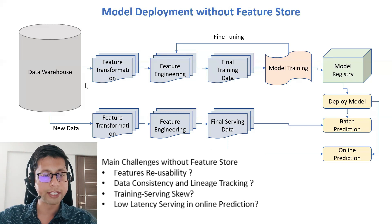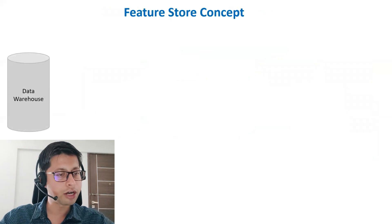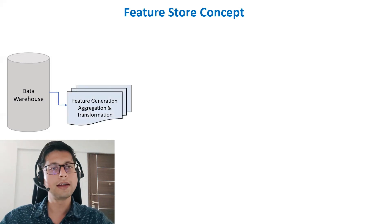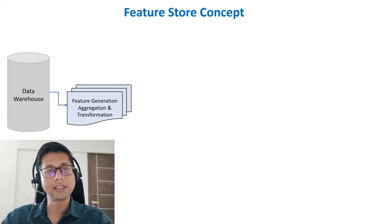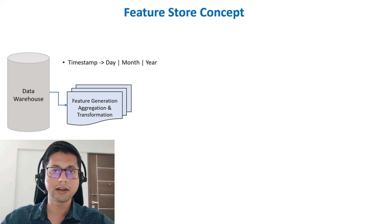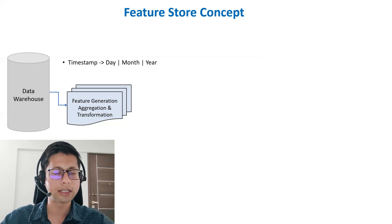Now with those challenges understood, let's jump to the feature store concept and see what changes in this architecture. We still start with the data warehouse — no change there. Let's understand what feature generation, feature transformation, and feature aggregation mean in the context of a feature store. For example, if your original data has a timestamp column, you often need to break it down into day, month, and year.